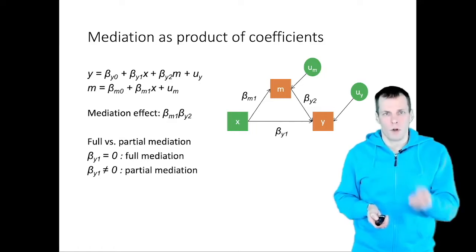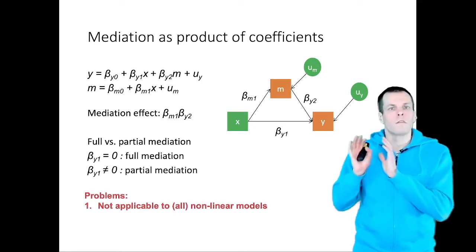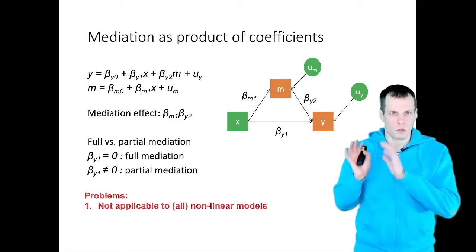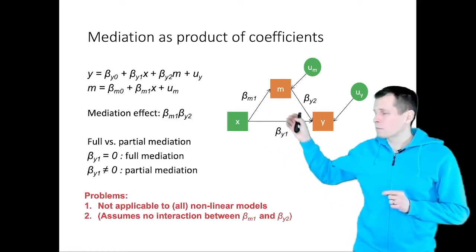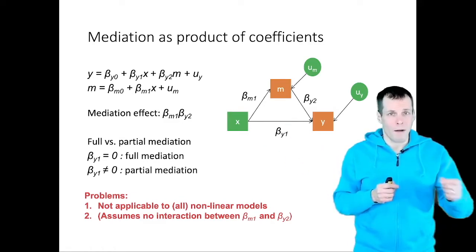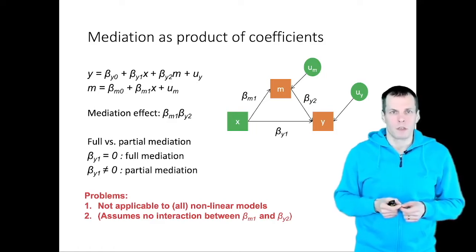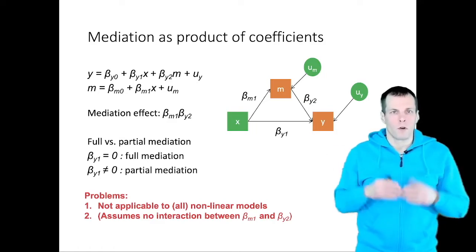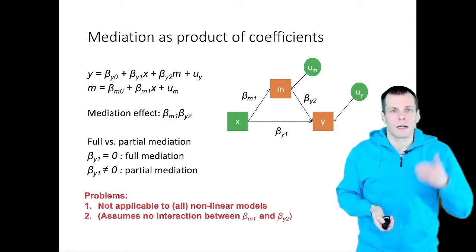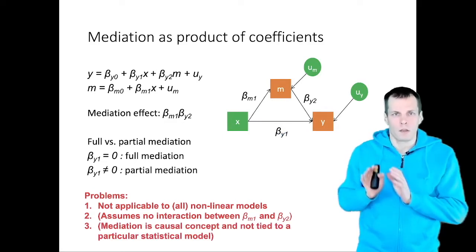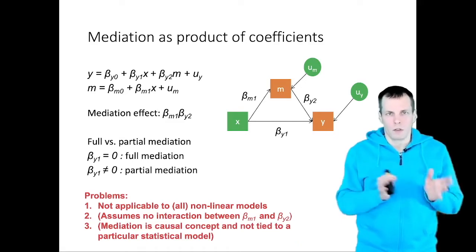In another video I talked about the problems of this approach. The first problem is that it's not applicable to all non-linear models — it works for some but not most. There's also a problem of causal heterogeneity: if the effect of x to m varies between individuals and the effect of m to y varies between individuals, the product of coefficients approach assumes those variations are uncorrelated. Additionally, we can't use any statistical model as a definition of mediation because mediation is a causal concept, not tied to any particular model.